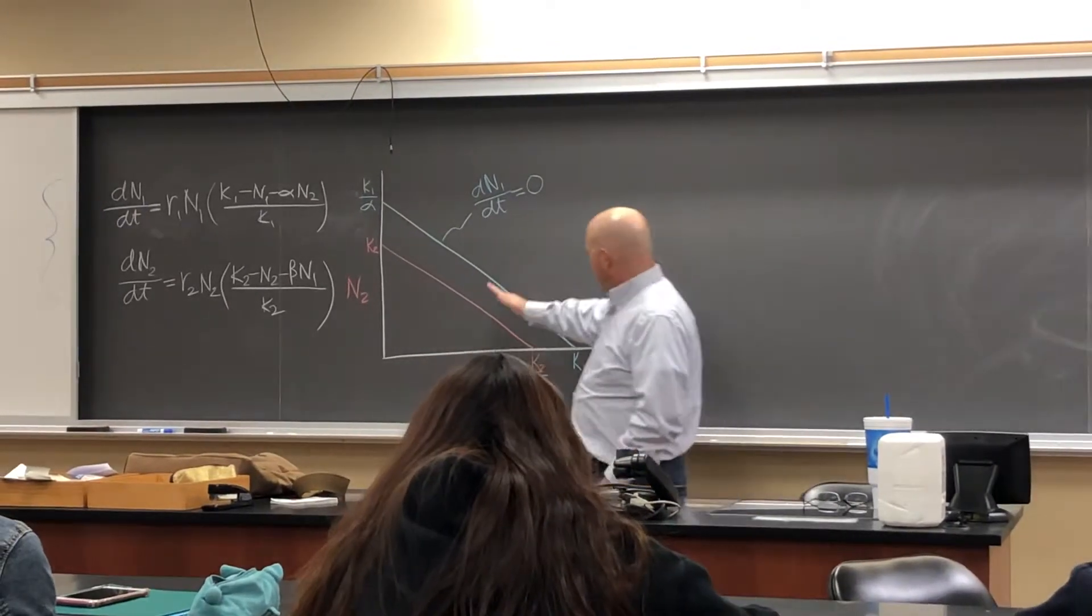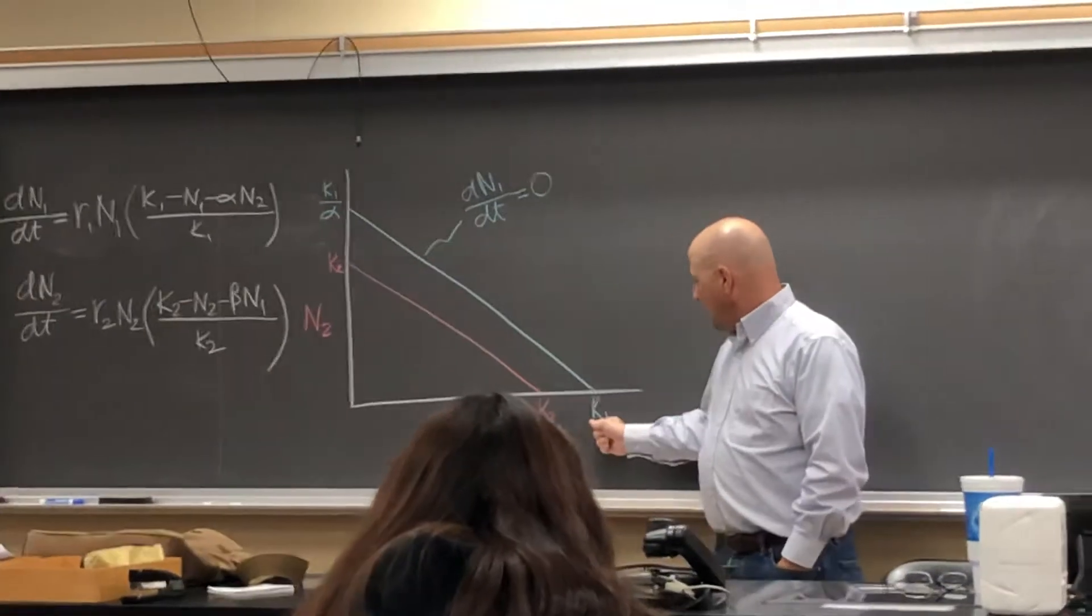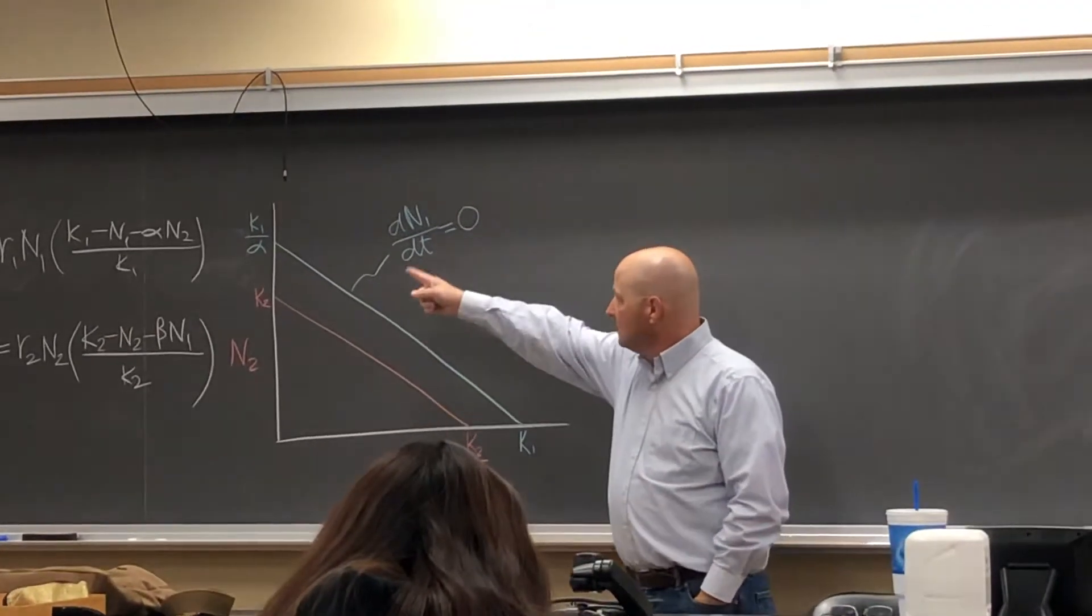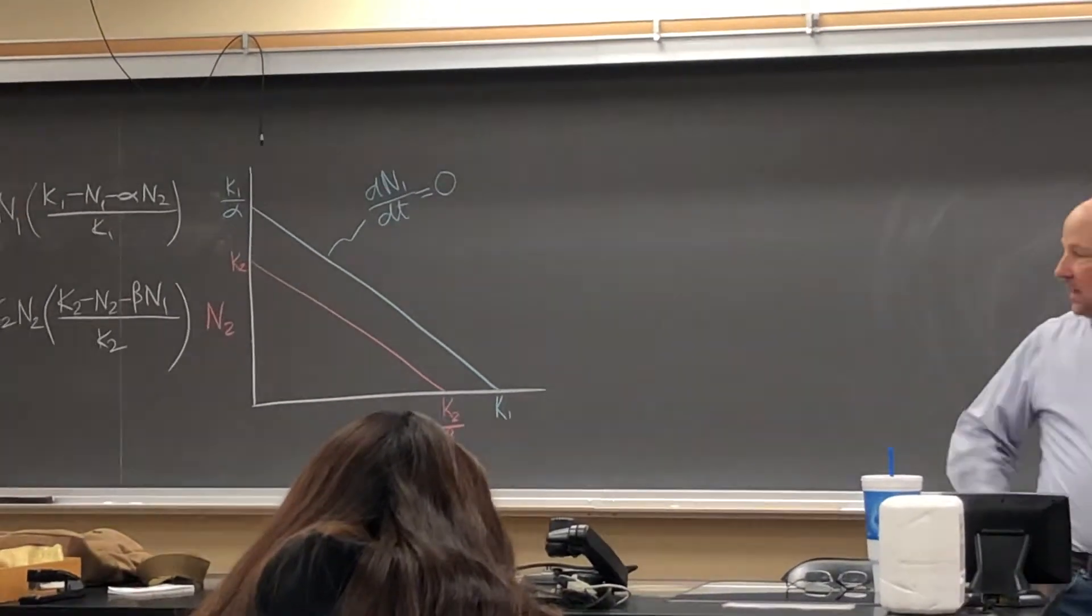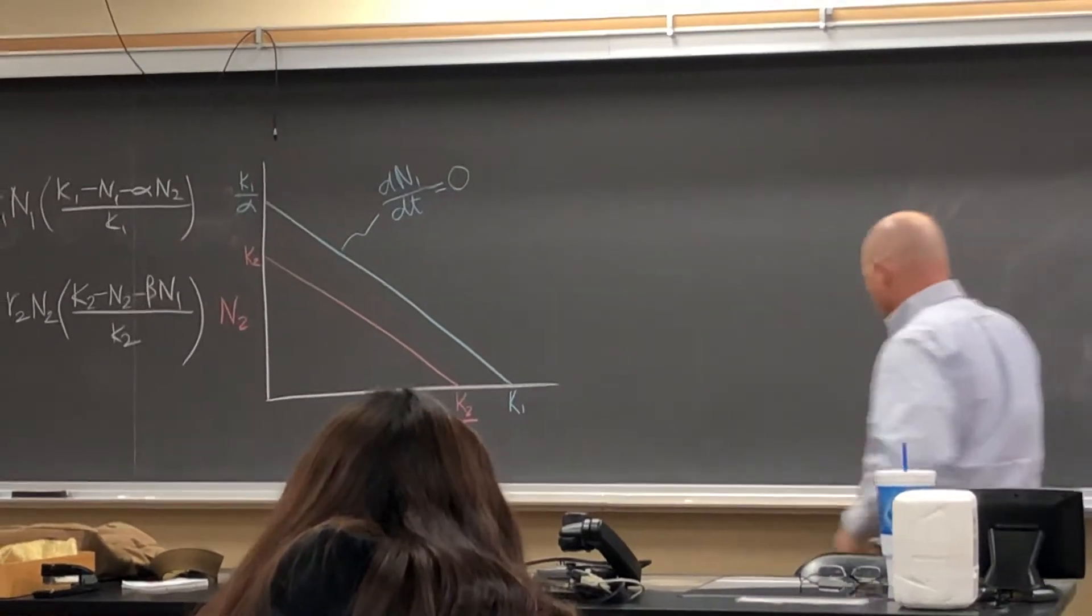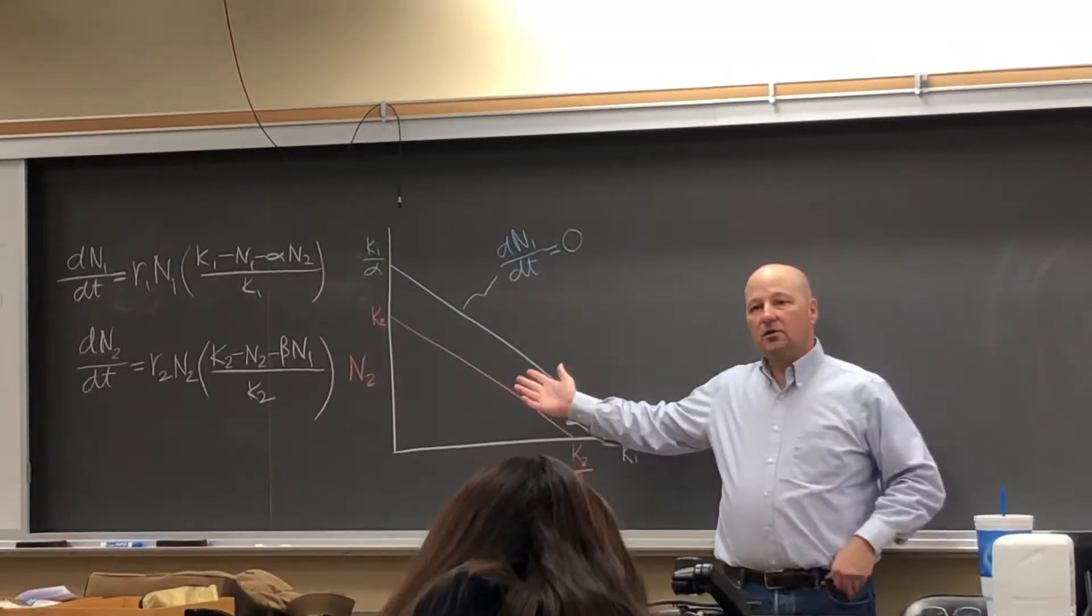Because their blue line, because K1 is greater than this. K1 over alpha is greater than that. Okay, so this is what we mentioned last time would be an example of competitive exclusion.